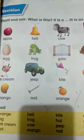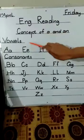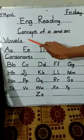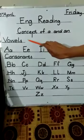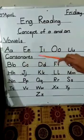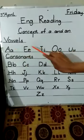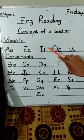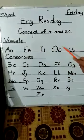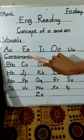Student, look at the book. What is this? This is vowels. Student, learn with me: A, E, I, O, U. What is this? These are vowels.